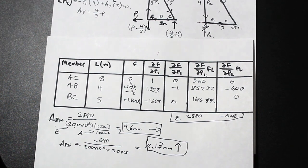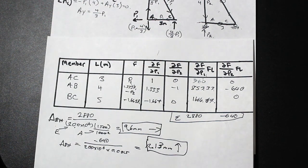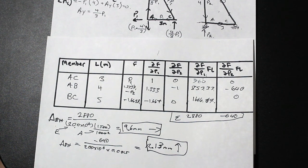That's it for Castigliano's Second Theorem for trusses. If you want to see another example problem, these get a little messy with the tables and the two trusses, but hopefully you enjoyed that. Thanks for watching — hit the like and subscribe button, and see you next time.